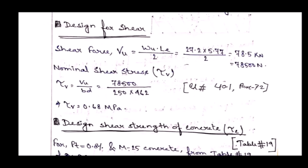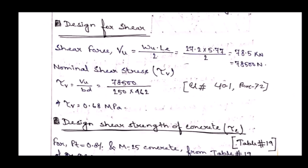From the shear force we find the nominal shear stress. Nominal shear stress Tau_V = VU / (B × D), from clause 40.1 of IS 456-2000. Substituting values: 78,500 / (250 × 462) = 0.68 MPa.